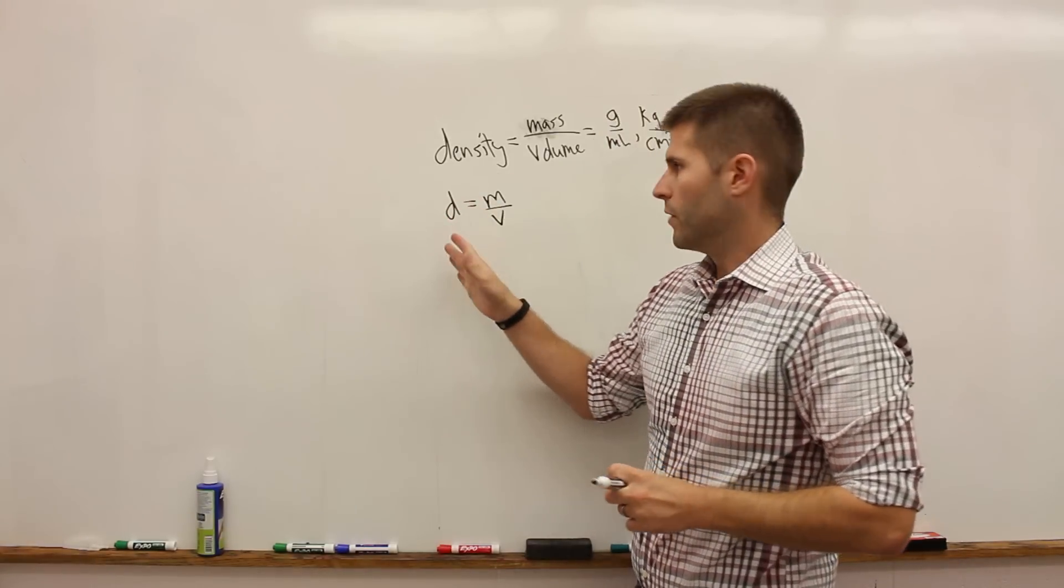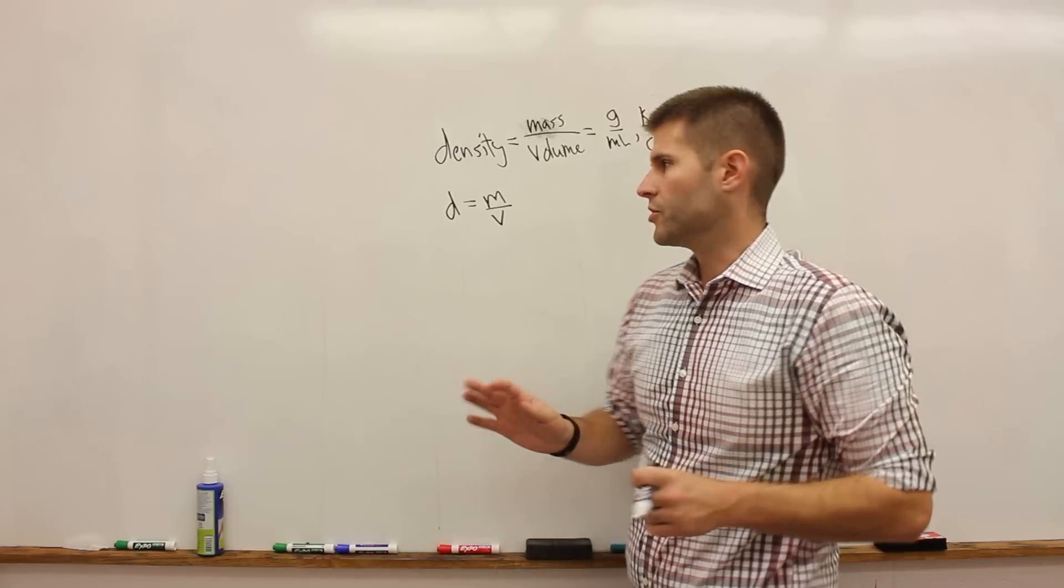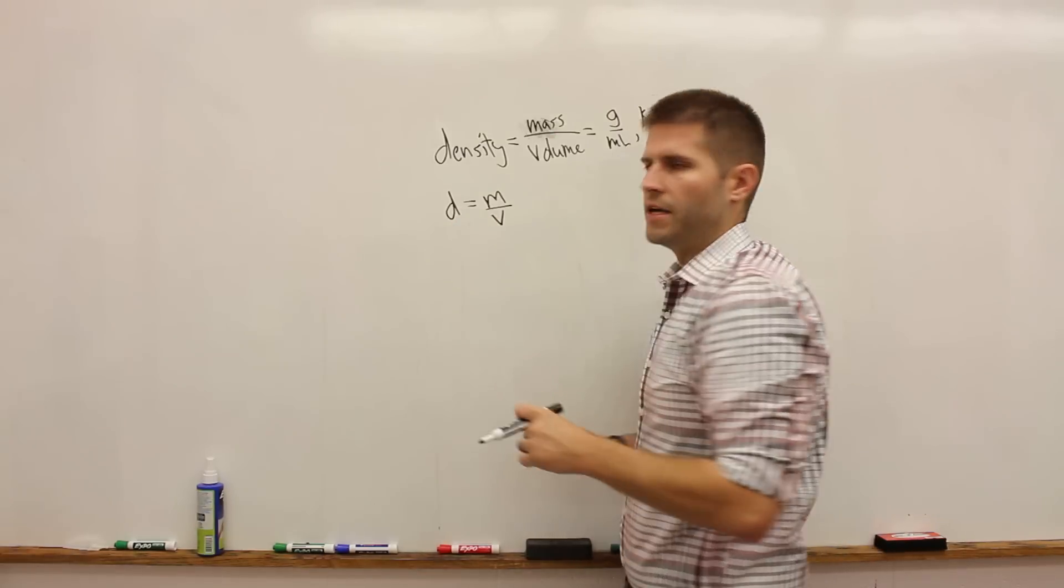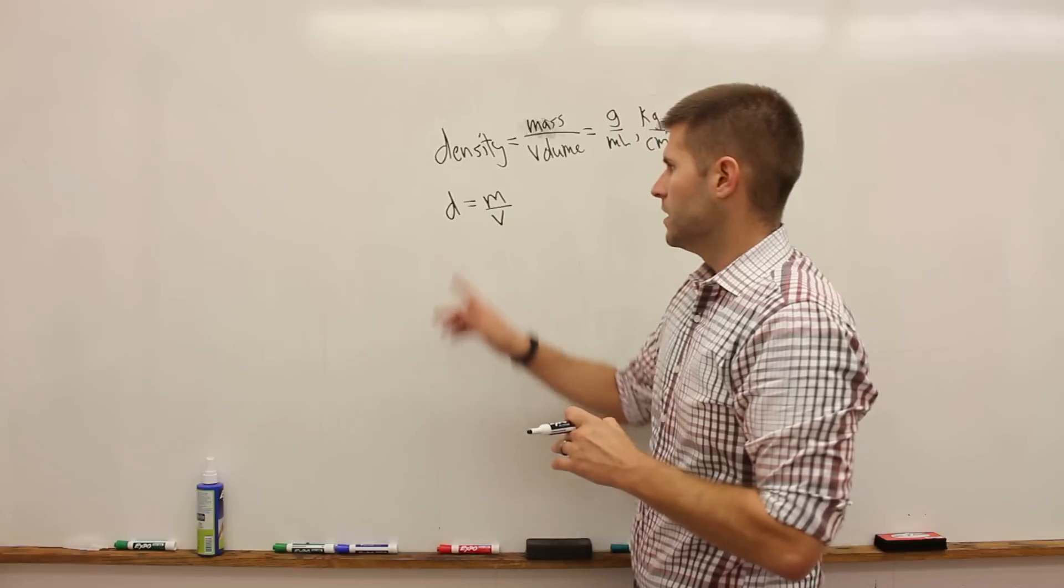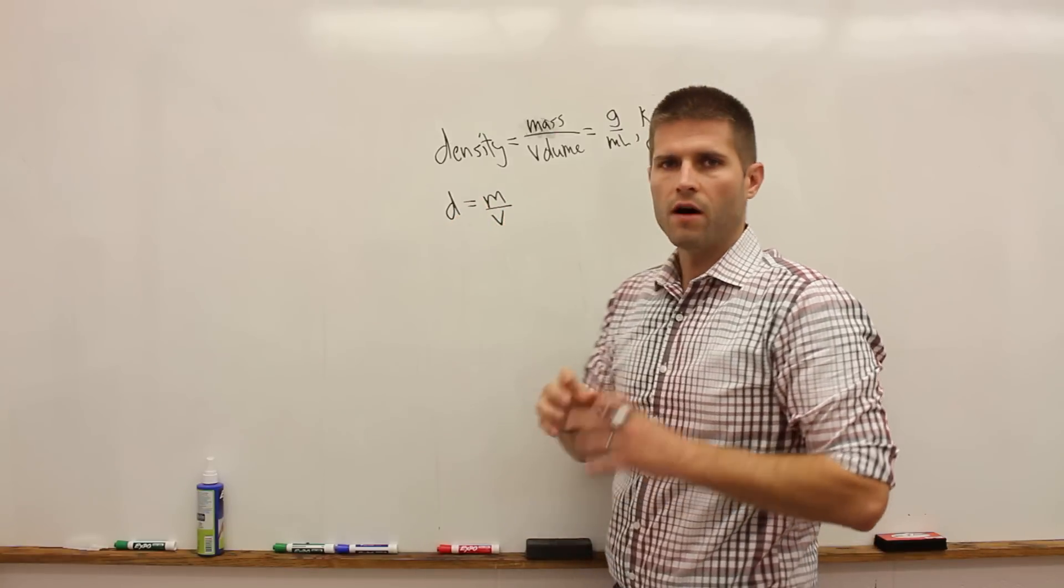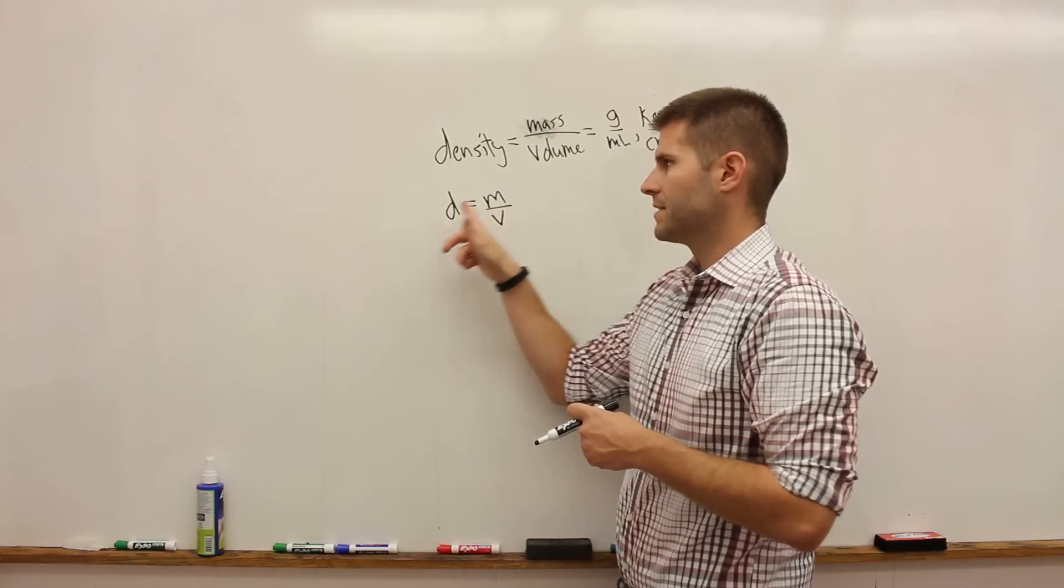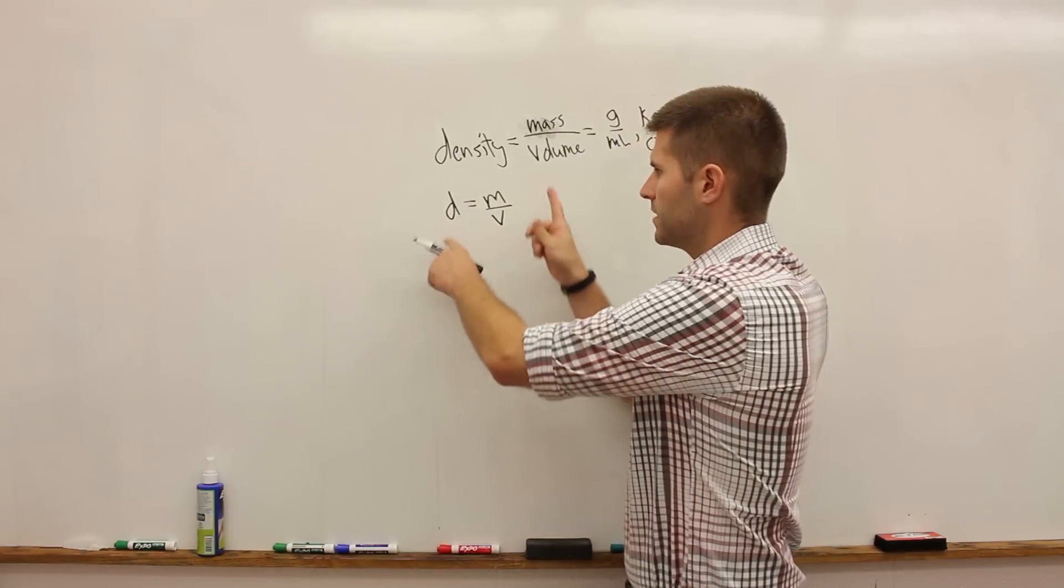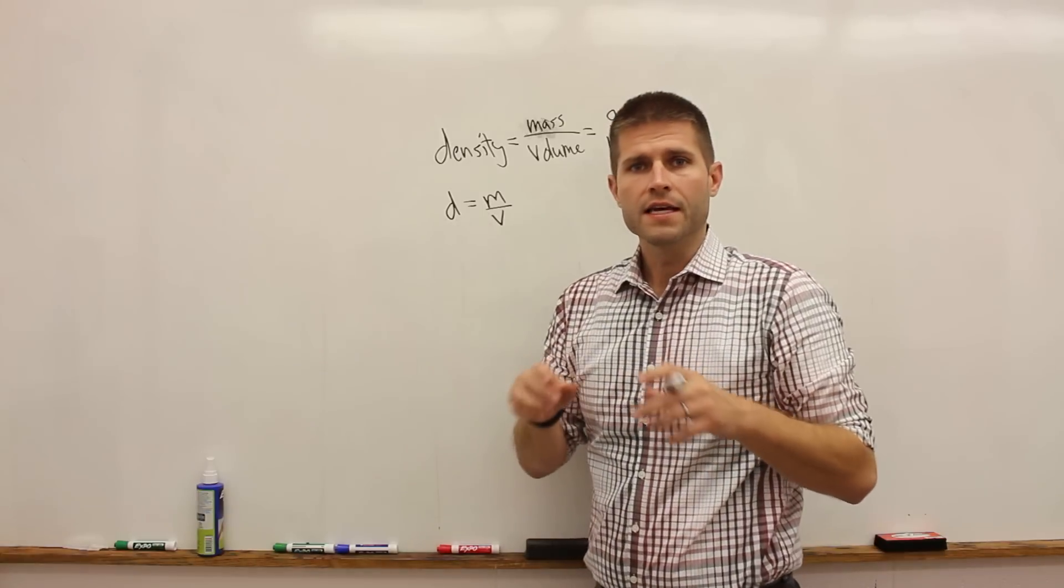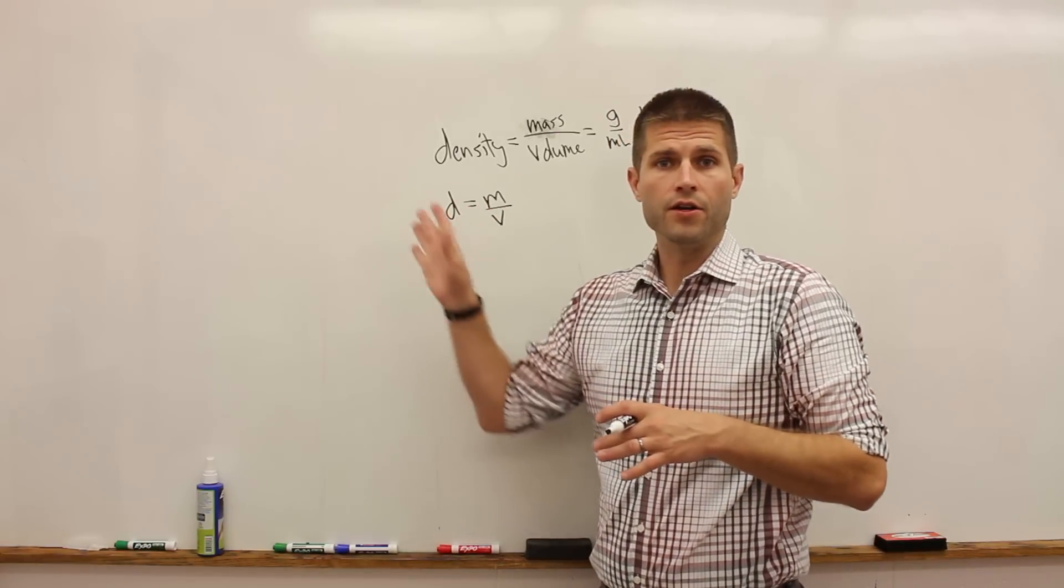Now this is the density equation, and what you're going to be doing for the rest of your chemistry career is rearranging this equation and solving for one of the variables. So in order to find the density we need to know the mass and the volume of a sample. If we wanted to know the volume we would need to know the mass and the density. So we can rearrange this equation in different ways and determine one of the unknown variables.